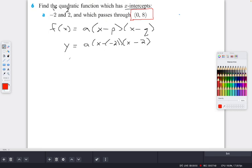And they tell you that it passes through the point (0, 8). So we can use this, it's helpful. That's the y-intercept. We can once again do this. We can go 8 = a(0 - (-2))(0 - 2), so that's a(0 + 2)(0 - 2).